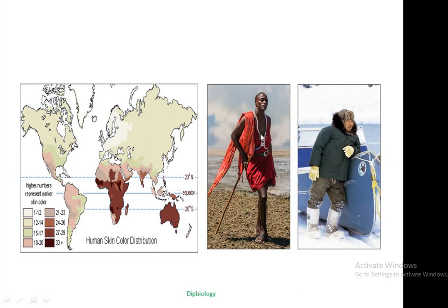High melanin or dark body coloration protects the body against ultraviolet radiation, which can otherwise cause DNA damage. This is all about how temperature can regulate the pigmentation of the animal kingdom. I hope that you have received some new inputs from this tutorial. Thank you.